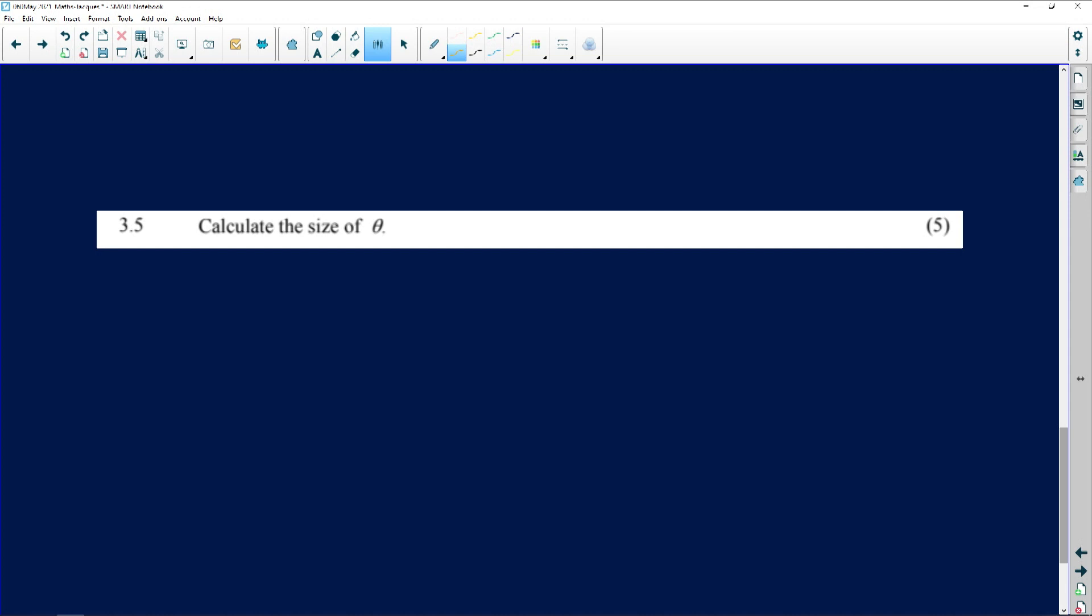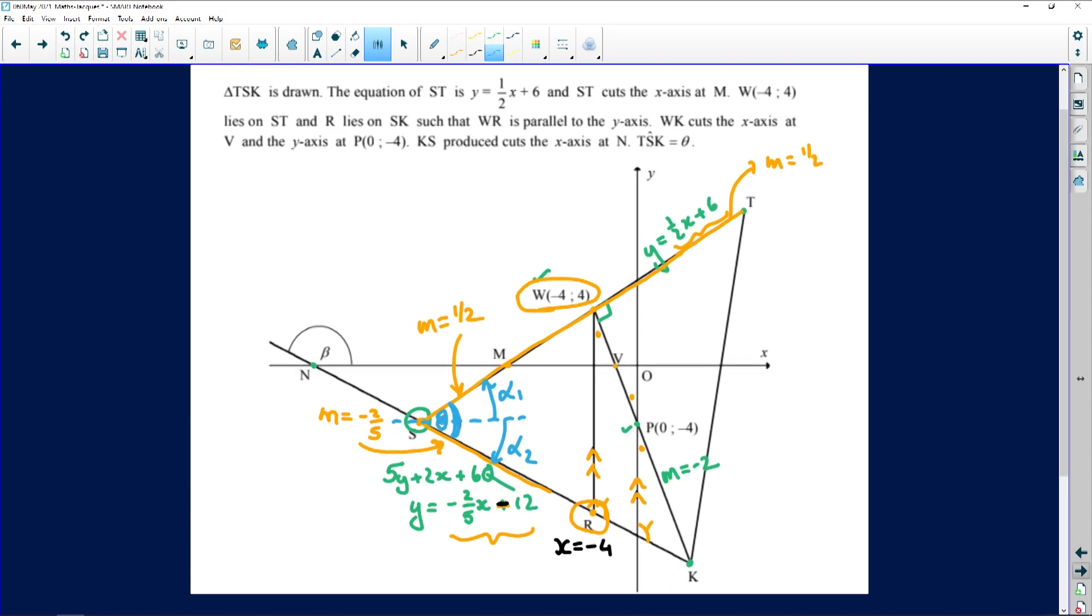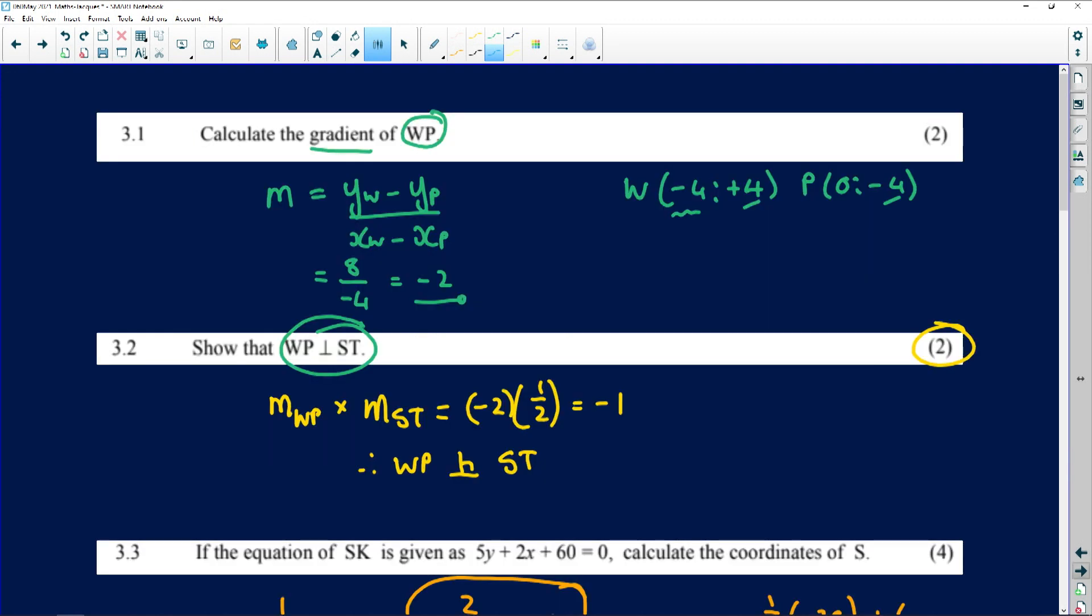Now they're asking us the second last question, to find the value of theta. Just a quick reminder, where's theta? It's where the line here, this line has a gradient of minus 2 over 5, this one, and that line had a gradient of a half. So I always tell my students, draw a horizontal through that point. Because then you can use that gradient, and let's call that alpha 1, and this here is going to be alpha 2. And the whole angle that we want is theta, and theta is going to be this angle plus that angle. So I just need, at this point, to use my arctan formulas. I've got to go and find those two angles.